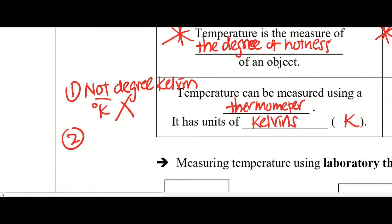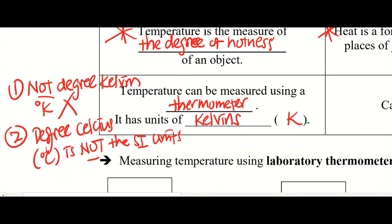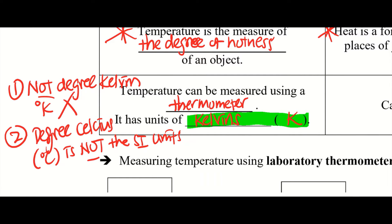Second thing: even though we commonly use degree Celsius, degree C is not the SI unit. SI means Standard International units. Internationally, we don't agree that degree Celsius should be the unit — because if you know, in the States, they use a totally different unit for temperature: Fahrenheit. So what is the standard? We use Kelvins as the standard unit. Don't get confused.